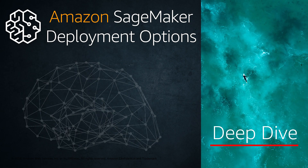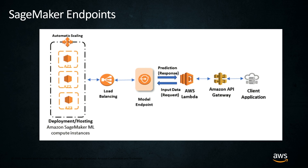Now we're going to learn about deployment options on Amazon SageMaker, and this is your deep dive. So first off, there's a thing called an endpoint — the SageMaker endpoint. What is this? It can be multiple EC2 instances, and in the case of multiple EC2 instances, they're spread over different availability zones in order to increase your high availability.